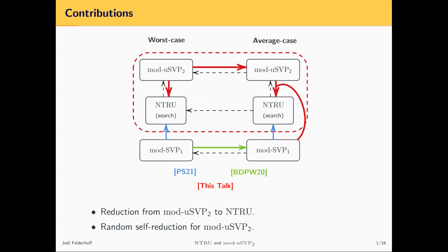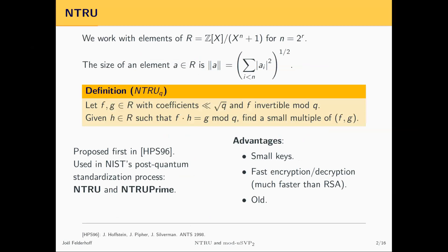Let me present the contributions. Module SVP of rank 1 is just a pedantic way of saying ideal SVP. I'm going to present a module lattice problem that we show is equivalent to NTRU — a security assumption used in some cryptographic schemes — and show this problem has a reduction from worst case to average case.